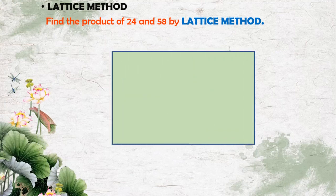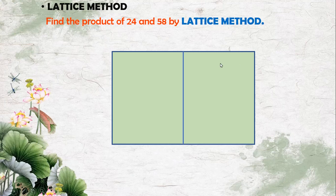To find the product of these two numbers using the lattice method, first we have to draw a rectangle. In this rectangle, the length will be divided into a number of columns based on the first number. The first number 24 has two digits, so I will divide this length into two columns — the first represents the ones place and the second represents the tens place.